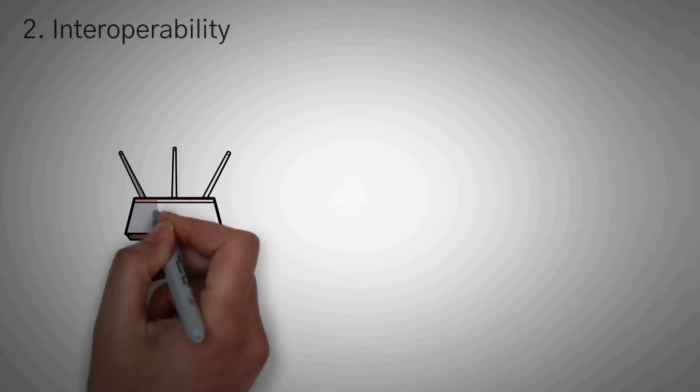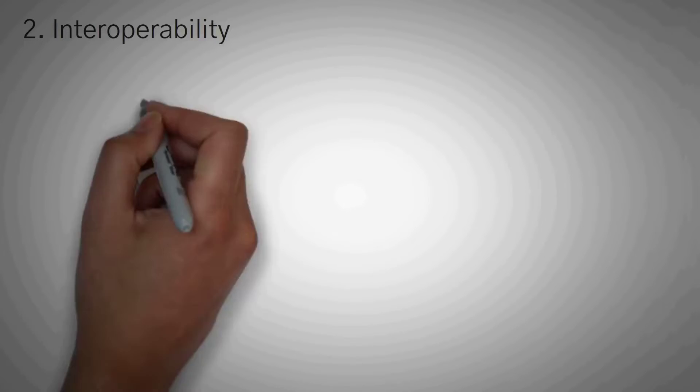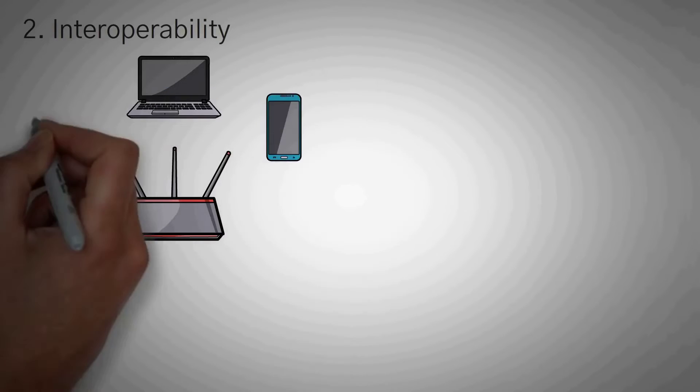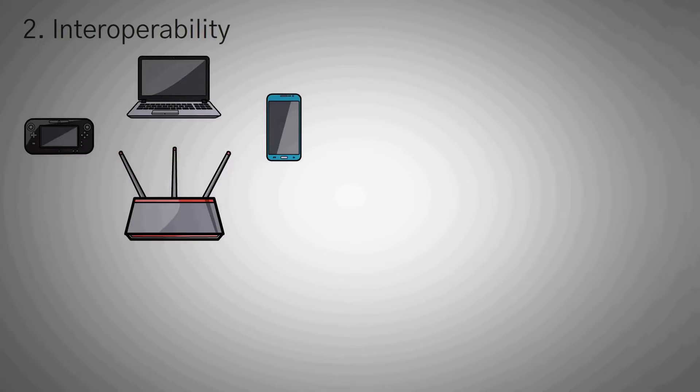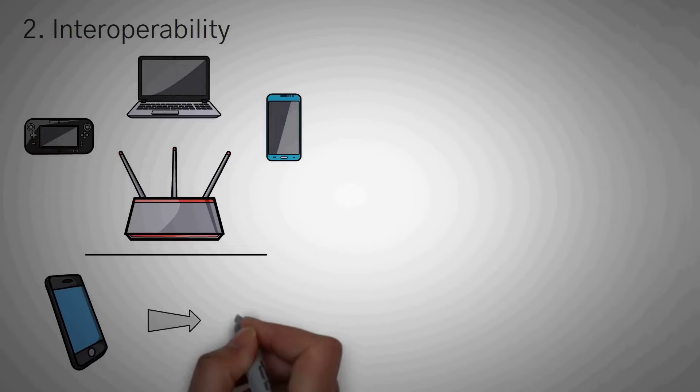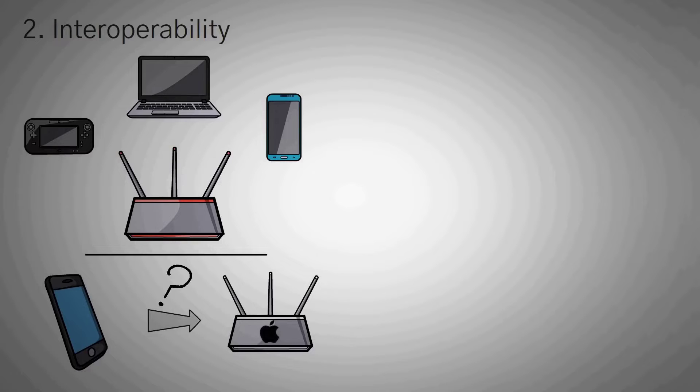The second problem is interoperability. So this is a very old technological problem. Let's think about this using an example of early wireless networking. If you've ever wanted to set up a wireless network in your house, you know you have to connect your devices with a router so that the signal can reach your device. But what if your Apple iPhone only connected to Apple routers?